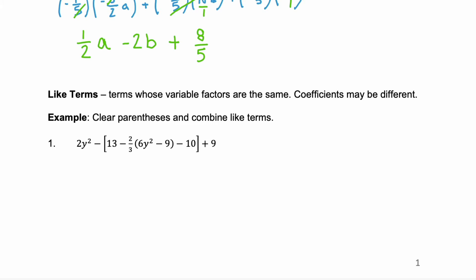Okay here we have a lot of parentheses. So to clear the parentheses we need to start on the inside. So the innermost parentheses are right here. This negative 2/3 times 6y squared minus 9.